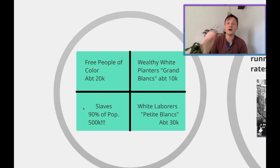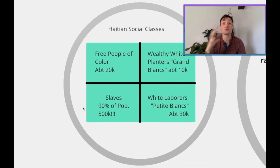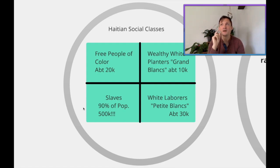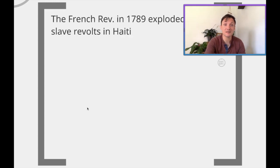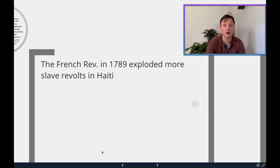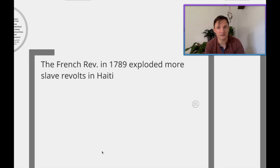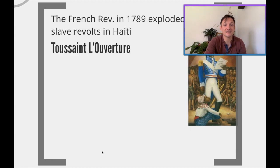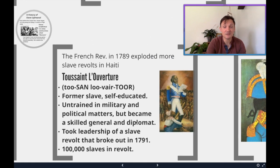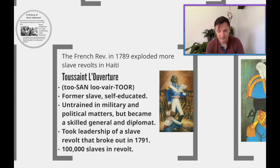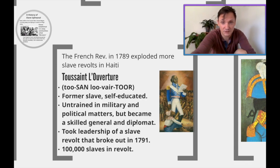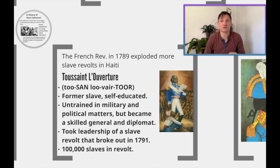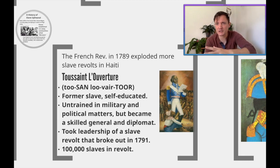What ends up erupting and throwing everything out of whack is the French Revolution, which begins in 1789. When the French Revolution begins in 1789, that explodes even more violence and slave revolts in the colony of Haiti itself. In 1789, slave revolts begin to erupt, and all the Grands Blancs back in France and all the Petit Blancs are focused on fighting with each other.